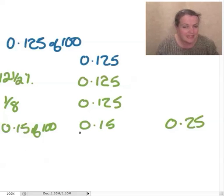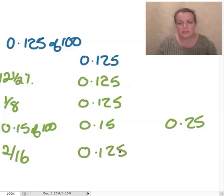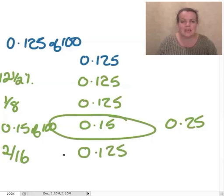So, that's the one that's wrong. And then the next one is 2 sixteenths. Do you agree that 2 sixteenths is 1 eighth? And 1 eighth was 12.5. So, the one that's different is 0.15 of 100, which is d.